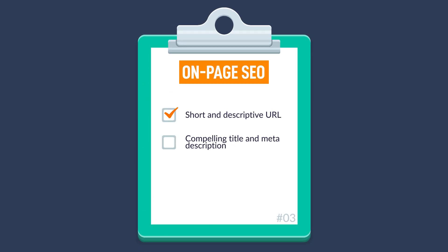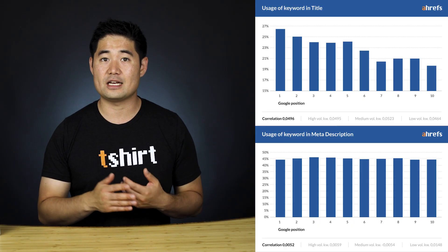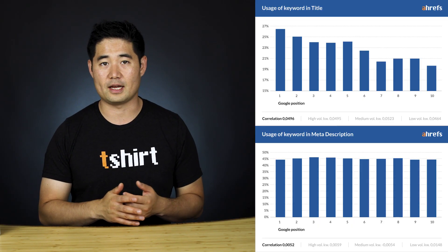Next, ensure you have a compelling title tag and meta description. Old SEO advice will tell you to include your target keyword in your title and meta description, but our data shows that exact match keywords in the title and description do not correlate with ranking position. The most important thing about the title is that it entices a click — after all, clicks translate into traffic. But if you find that you're stuffing the keyword for the sake of inclusion, then I wouldn't worry too much about it.